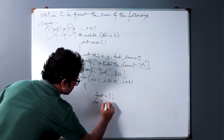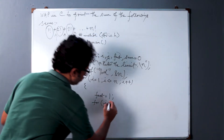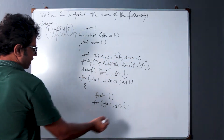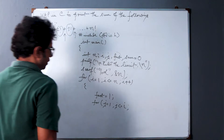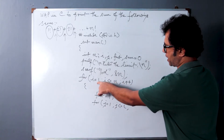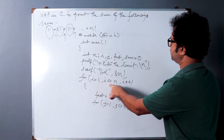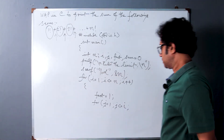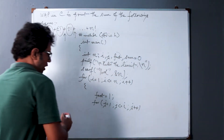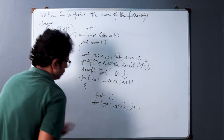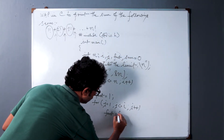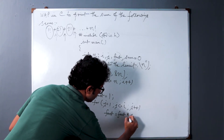Now we enter the inner for loop: for j equal to 1, j less than or equal to i. As I have already discussed, this inner loop is controlled by the outer loop variable i, and the outer loop variable is controlled by the n value input by the user. So j equal to 1, j less than or equal to i, j plus plus. Now we calculate the factorial as fact equal to fact star j.